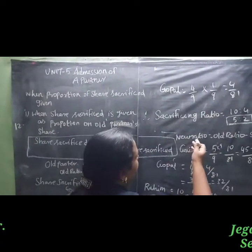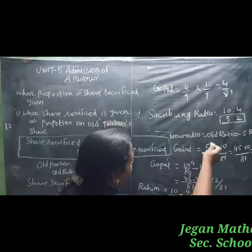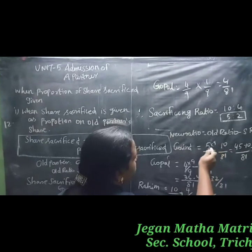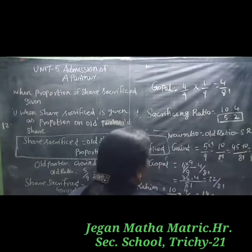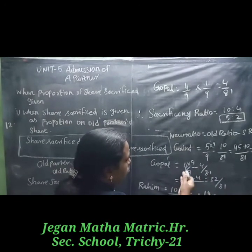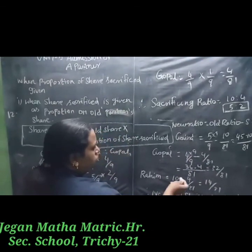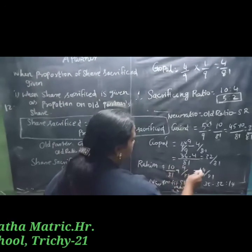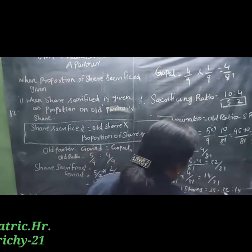New ratio: Govind's new ratio equals 5/9 minus 10/81. LCM 81: 45/81 minus 10/81 equals 35/81. Gopal: 4/9 minus 4/81 equals 36/81 minus 4/81 equals 32/81. Rahim: Govind sacrifice 10/81 plus Gopal sacrifice 4/81 equals 14/81. Therefore, new profit sharing ratio equals 35 : 32 : 14.